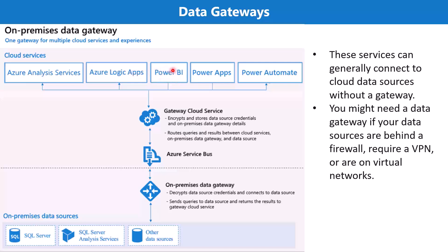Once we publish our report to Power BI service, the data has to be refreshed because the data is changing in the data source. New data has to come into the dataset, and on top of the dataset there are reports where the newer data needs to be shown. In certain scenarios, the data is residing in an on-premises location.